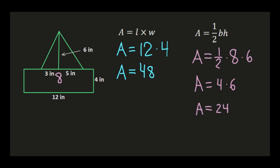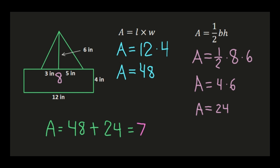Now I need to find the total area of this composite figure. I'll add together the rectangular portion and the triangular portion. The area for the rectangle was 48 and the area of the triangle was 24, so my total composite area is 48 plus 24, which equals 72. I'm working in inches, so my total composite area is 72 inches squared.